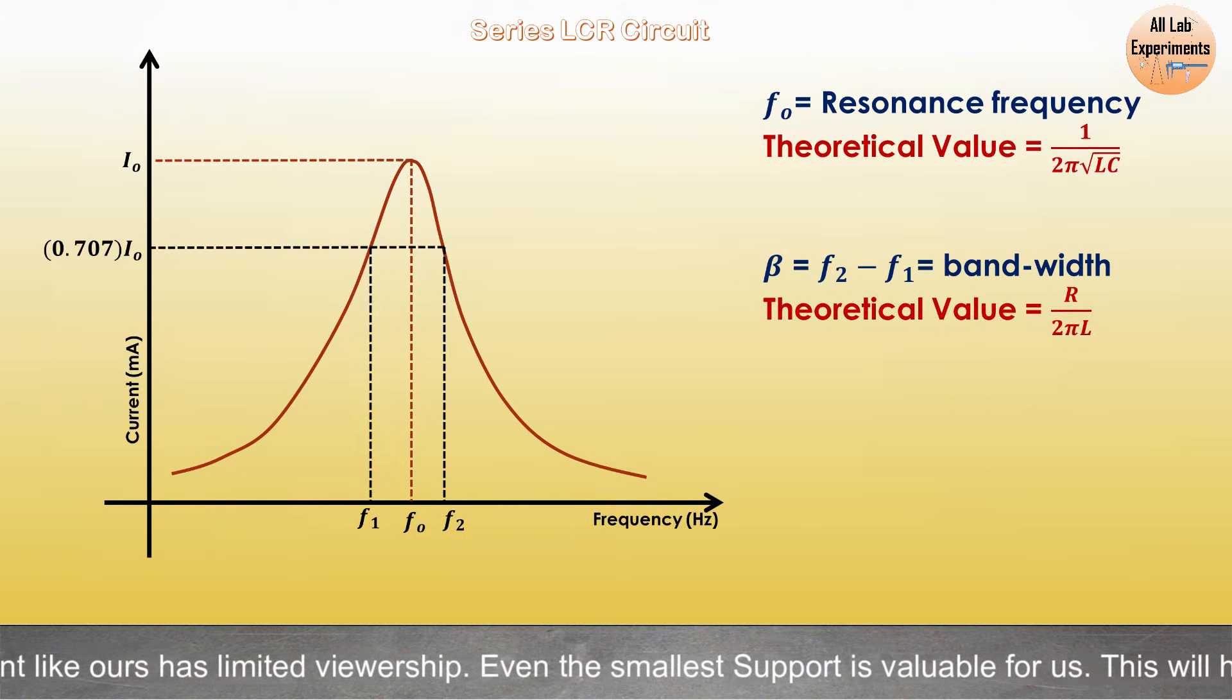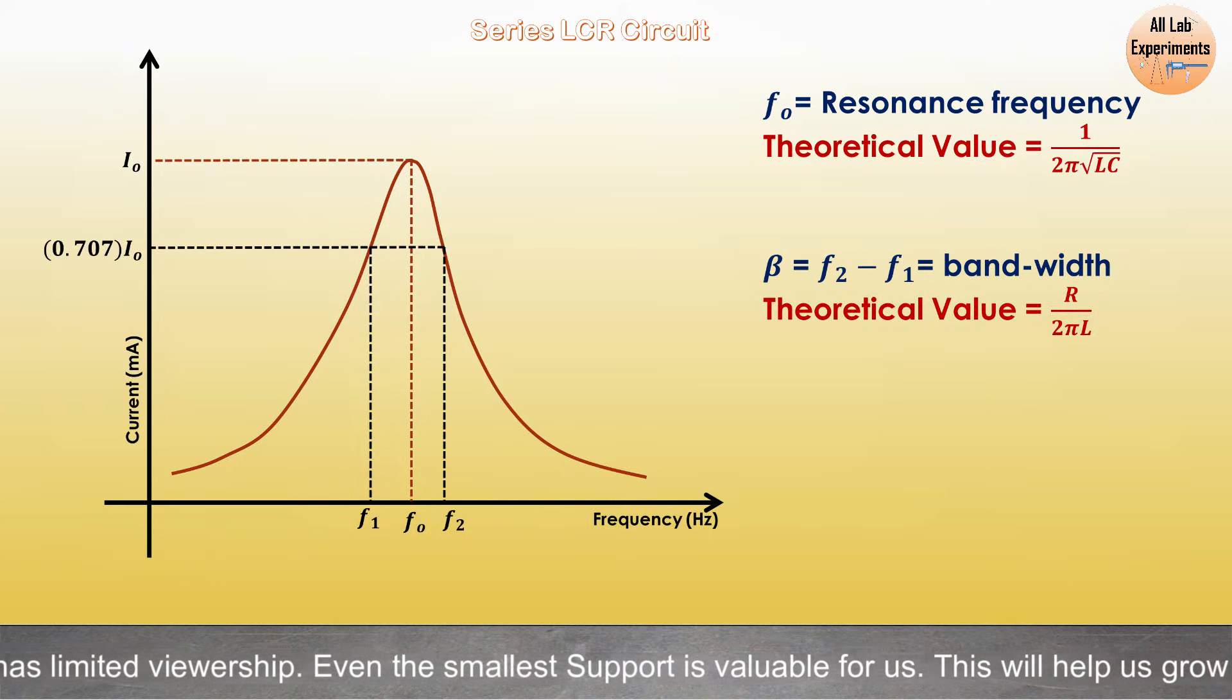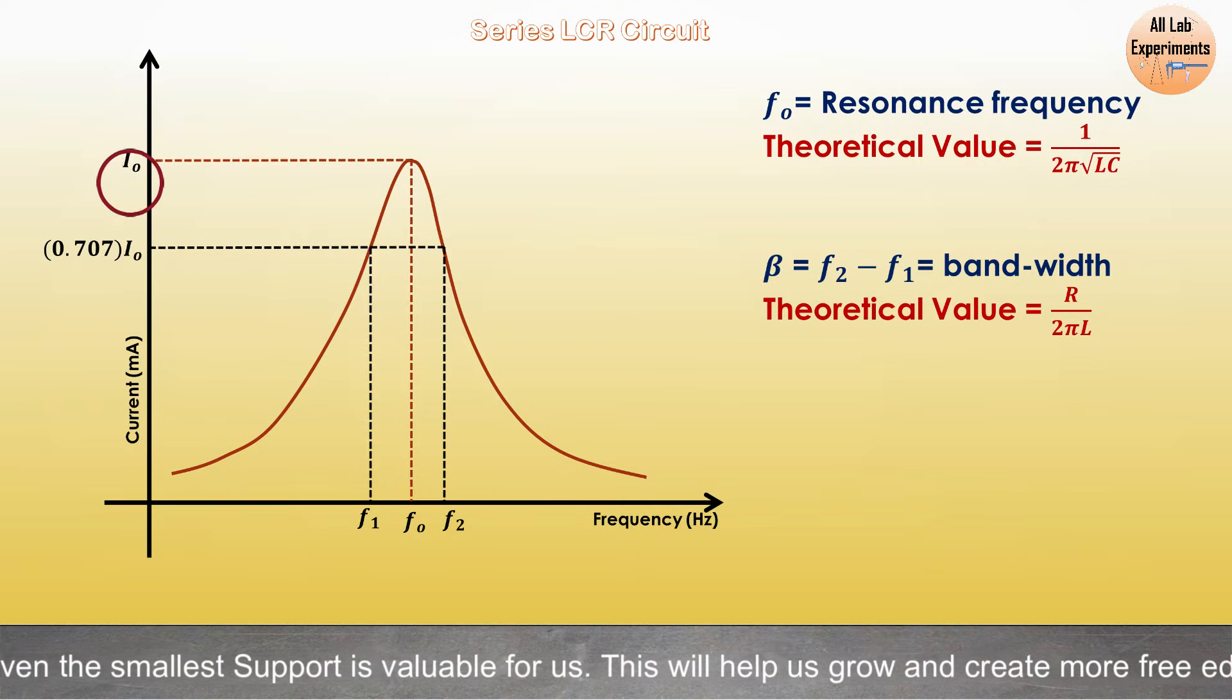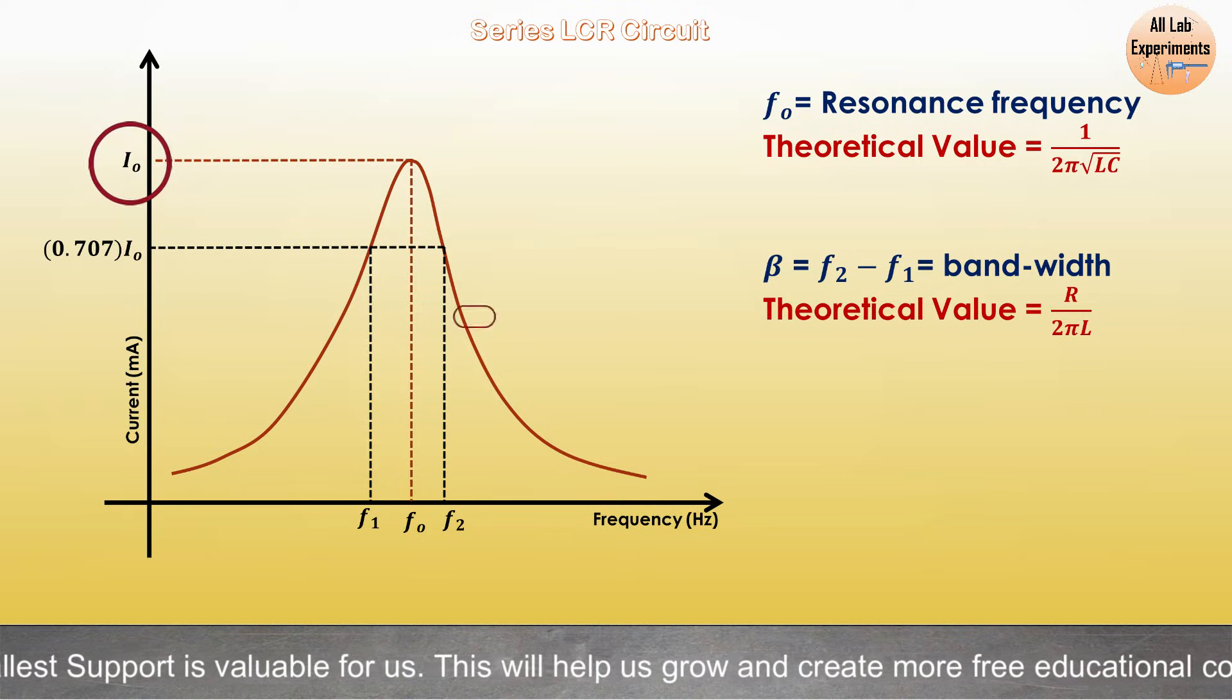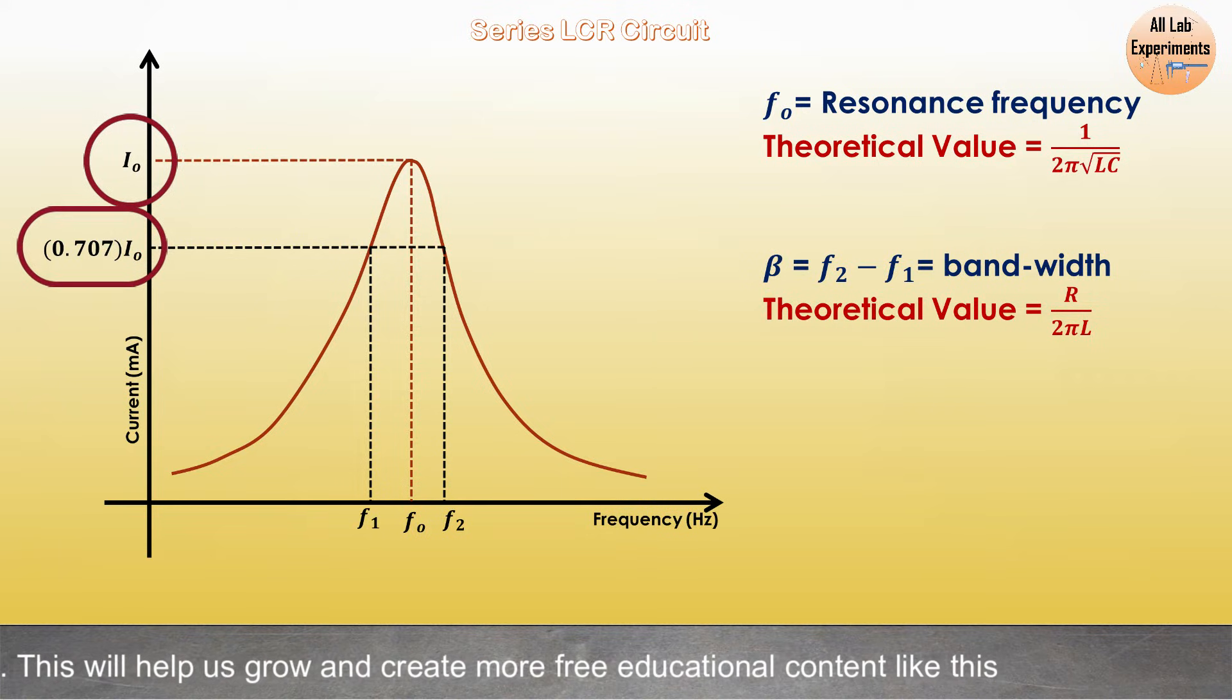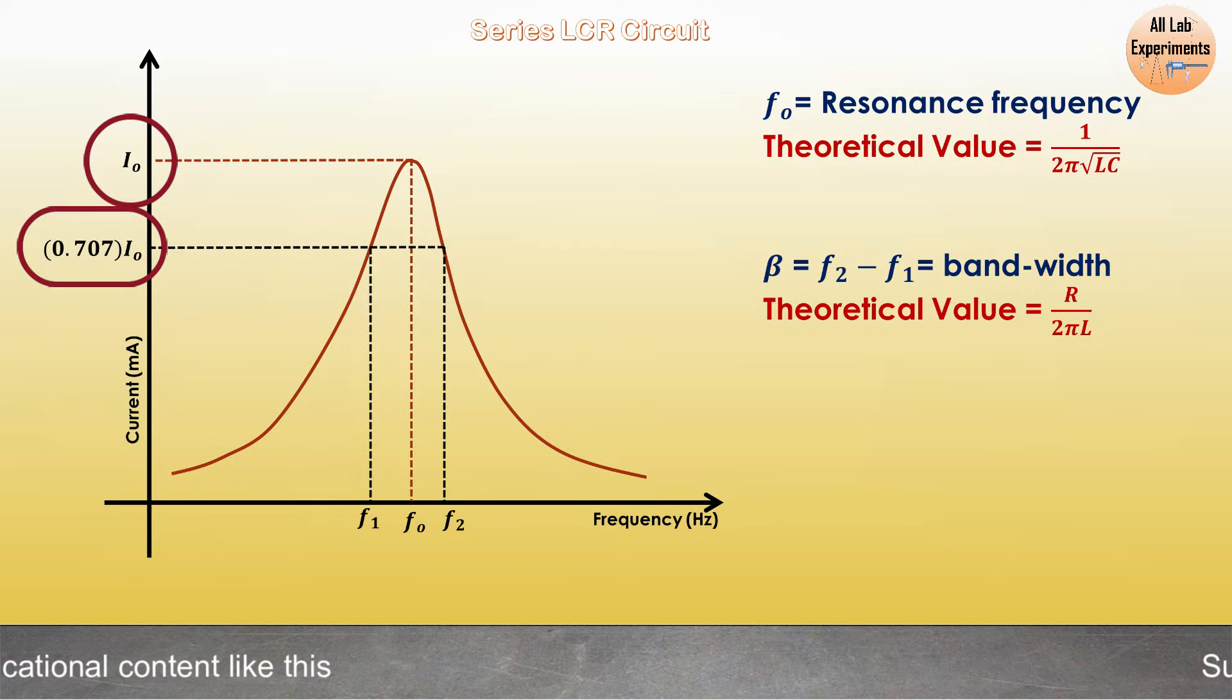After this we need to calculate the bandwidth. To calculate the bandwidth, let the value of maximum current be I₀, then choose a value of current at 0.707 I₀. At this value we will get two frequencies, so the difference of these frequencies will be the bandwidth. We also have its theoretical value which can be calculated using this formula.